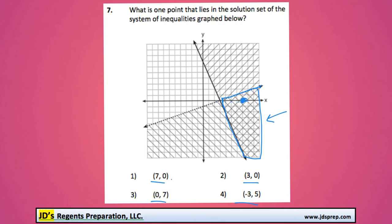We can double-check with the other ones. (0, 7) would be 1, 2, 3, 4, 5, 6, 7. Yeah, right there.